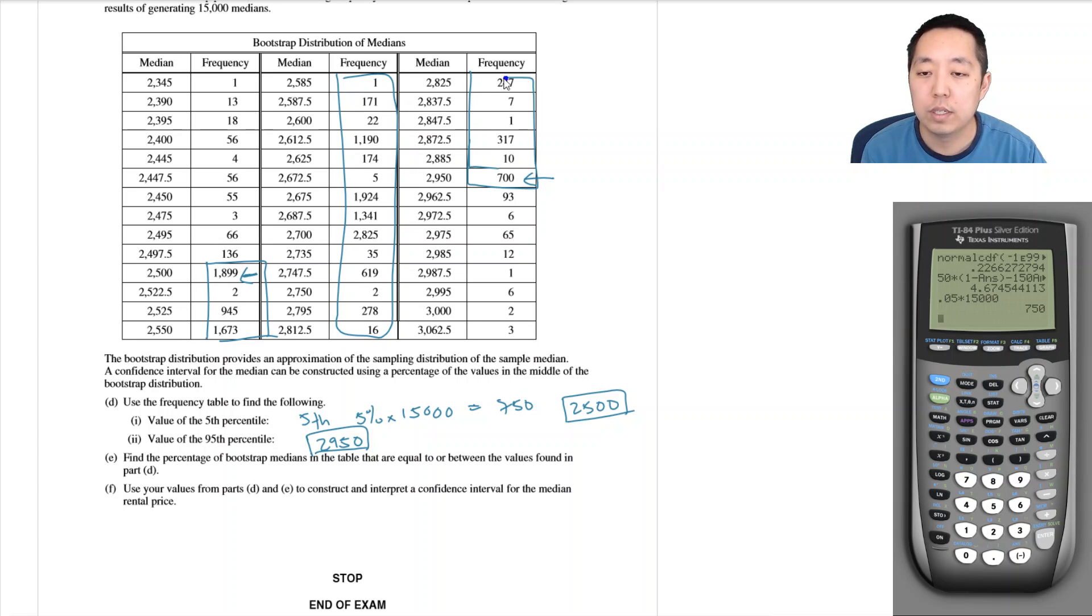Including this one, because it says equal to or between. I would add up all those values, and that's kind of a lot of calculations. I decided to add up all these other ones because I know there's a total of 15,000, so if I add these and add these, it would be 15,000 minus this sum here.